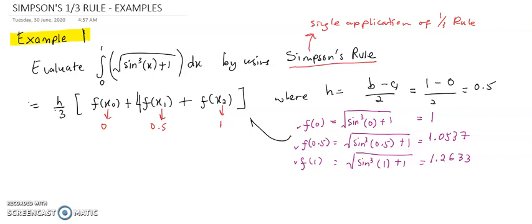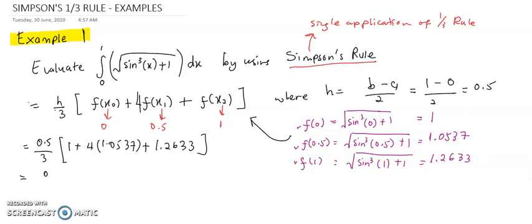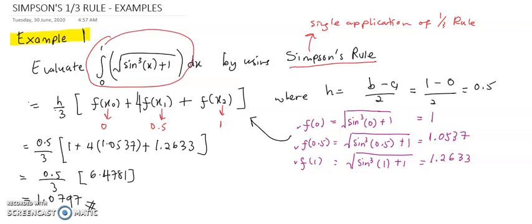Next, substitute these values into the formula. So we have 0.5 over 3, multiplied by f(x0) which is 1, plus 4 times f(0.5) which is 1.0537, plus f(1) which is 1.2633. The sum inside the bracket is 6.4781, and the final answer is 1.0797. This is the value of the integral using Simpson's one-third rule.